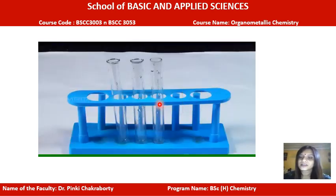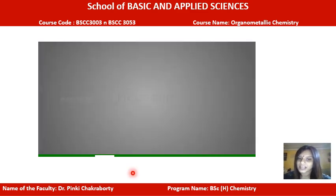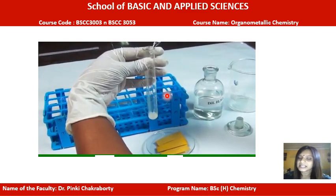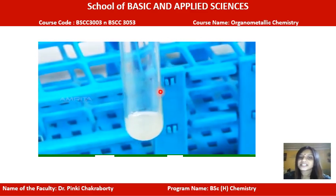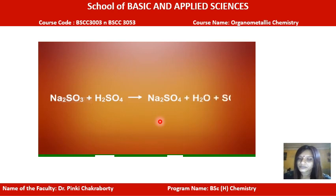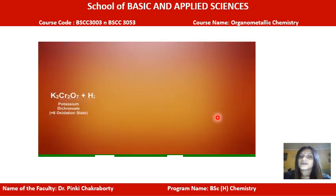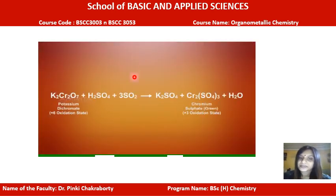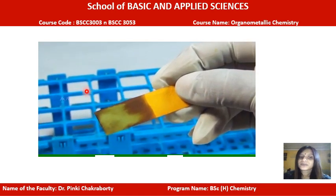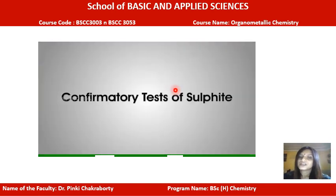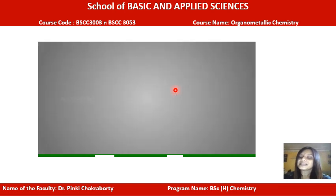The second preliminary test is the dilute sulphuric acid test. Materials required: original salt, dilute sulphuric acid, acidified potassium dichromate paper (orange in colour), and droppers. In a test tube, take the salt and add dilute sulphuric acid so the sulphite salt decomposes to release pungent SO2 gas. Place the acidified potassium dichromate paper near the mouth of the test tube; chromium changes from +6 oxidation state in dichromate to +3 in chromium sulphate, and the paper turns green.